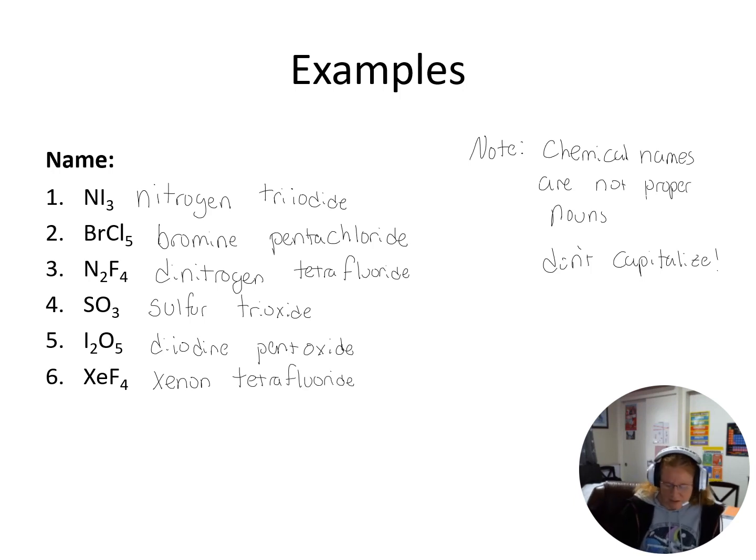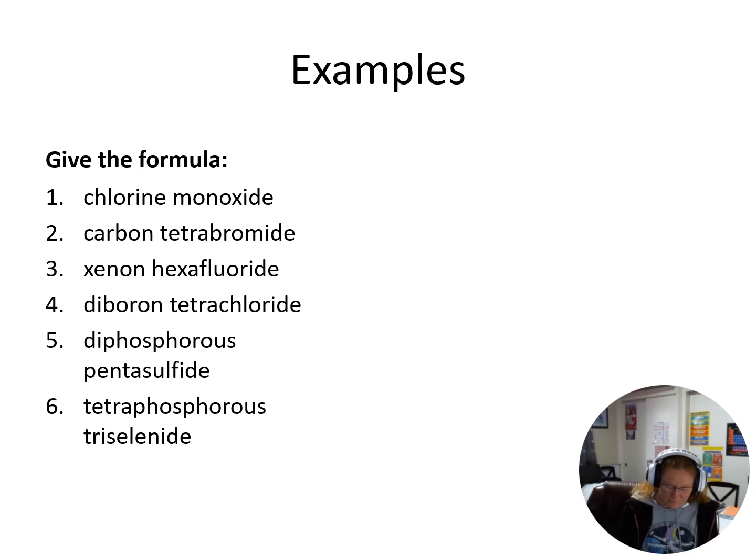Okay, so we can go the other way around. We can start off with some names and we can figure out their formulas. All right, so I have chlorine monoxide - there's no prefix there so I know I only have one chlorine, and then mono for one, so chlorine monoxide is ClO. Carbon tetrabromide, so CBr4.